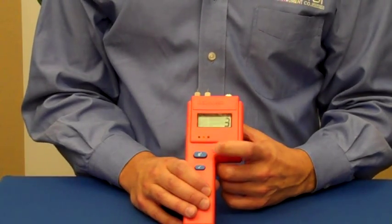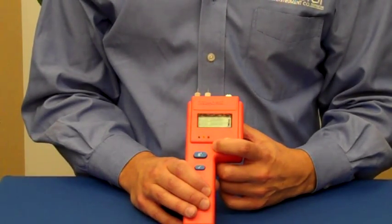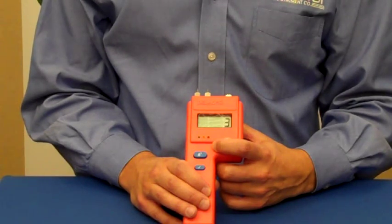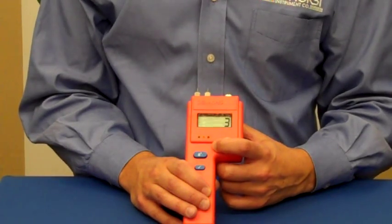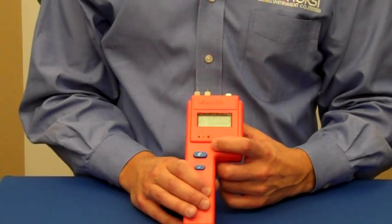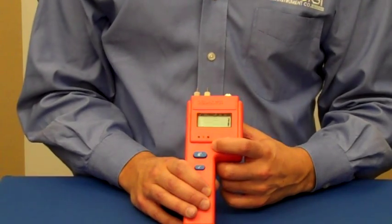To access those scales, you simply press the asterisk button here and just choose among one, two or three. One being the wood scale, two being the reference scale, and three being the drywall scale.